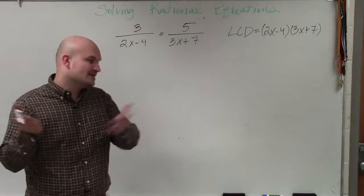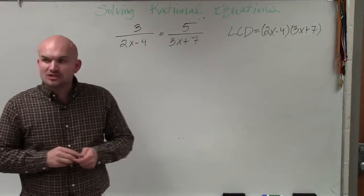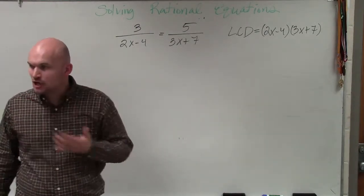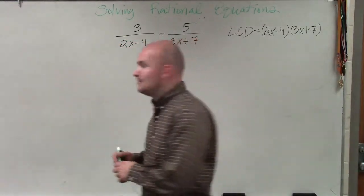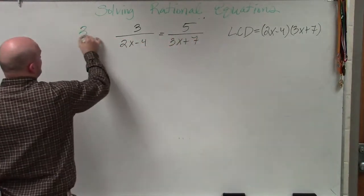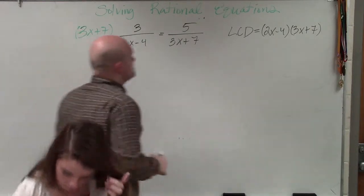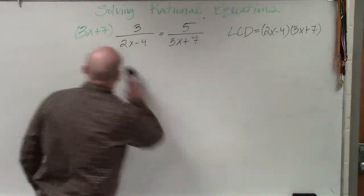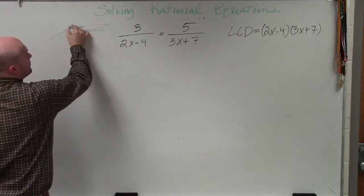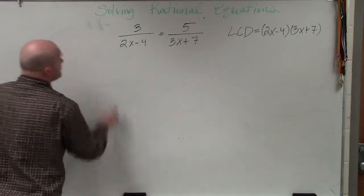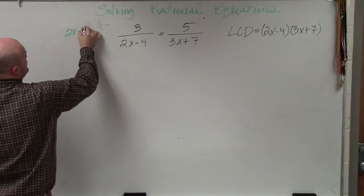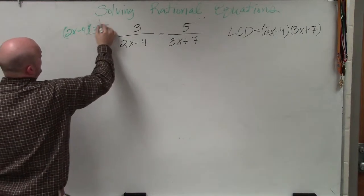Now, what do we do? We take that product, and we multiply it by every single term, like I told you in the last example. So it's just like the last example. You multiply everything by those two terms. So I have 3x plus 7 times, oh I'm sorry, the whole LCD. 2x minus 4 times 3x plus 7.